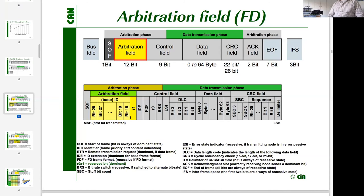After the FDF bit there is a new R0 bit reserved for future extension — potentially the CANXL bit — always dominant. After that comes the BRS bit (bit rate switch bit), and at the sample point of the BRS bit, if indicated, we switch to the accelerated data transmission phase. Importantly, in CANFD the remote frame format is not available — we cannot code a remote transmission request in the CANFD frame format.